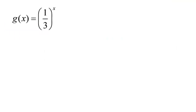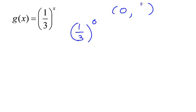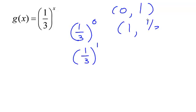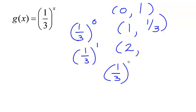Now let's look at this exponential function: g of x equals 1 third to the x. Let's jot down a few points again. If I plug in 0, well, 1 third to the 0 — anything to the 0 power is just 1. If I plug in 1, I will have 1 third to the first, which is simply 1 third. If I plug in 2, I get 1 third to the second, which is 1 third times 1 third, which is 1 ninth.